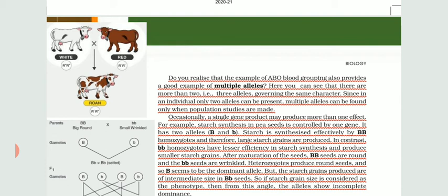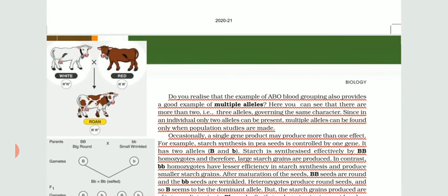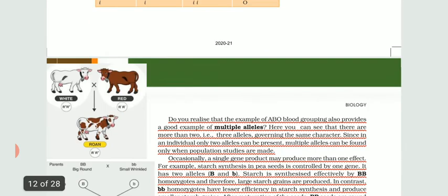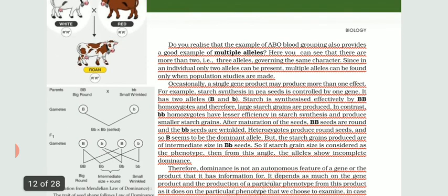Then came two new topics that were exactly deviating from the laws given by Mendel: one is incomplete dominance and the second is co-dominance. Under co-dominance we have talked about the ABO blood group system in the human population, where a single gene having three alleles controls a single trait — the blood group. That's why this feature is also known as multiple allelism, and it is characterized by a single gene producing more than one effect.